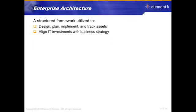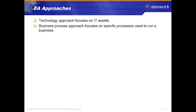In an enterprise architecture, we need a framework that helps us design, plan, implement, and track IT assets, and of course align investments with the business strategy. For example, when working in Africa, we didn't buy expensive equipment because the business strategy recognized the harshness of the environment and the reality that there would be turnover of equipment. The enterprise approach includes a technology focus on IT assets and a business process focus on specific processes used to run a business.